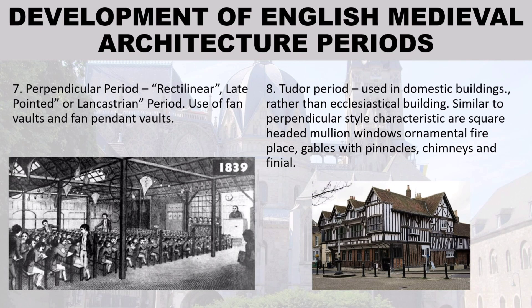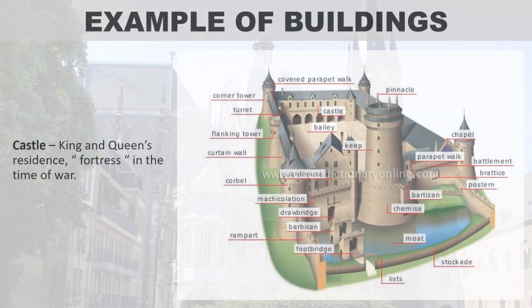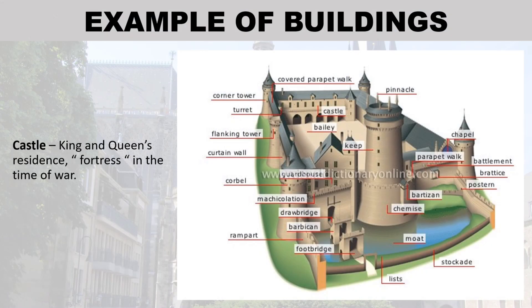Tudor period: Tudor style is used in domestic buildings rather than ecclesiastical buildings. Similar to the Perpendicular style, its characteristics include square-headed mullion windows, ornamental fireplaces, gables with pinnacles, chimneys, and finials.